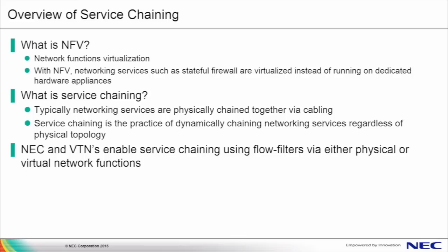To provide an overview of service chaining, we'll start by covering some basic terminology and concepts. First, NFV, or network functions virtualization. This is a framework to deploy and manage virtualized network functions. Recall that typically, a network function such as a layer 7 firewall or load balancing would run on some sort of dedicated single-purpose physical appliance. With NFV and the NFV framework, it enables additional flexibility by providing the means to deploy and manage these network functions as virtual instead of physical appliances on x86 servers rather than dedicated single-purpose boxes.